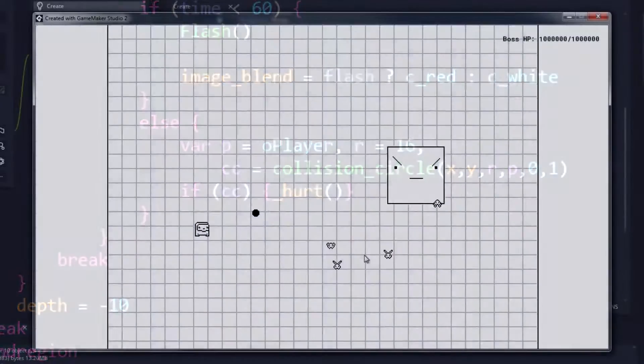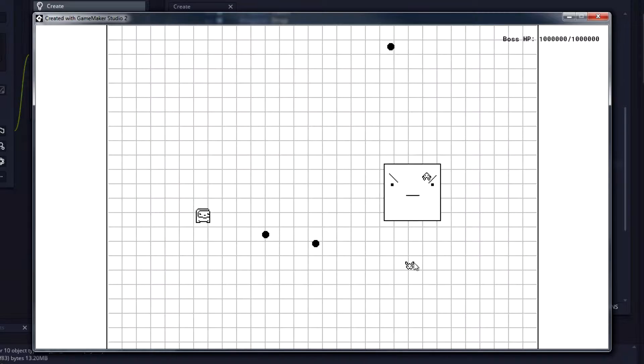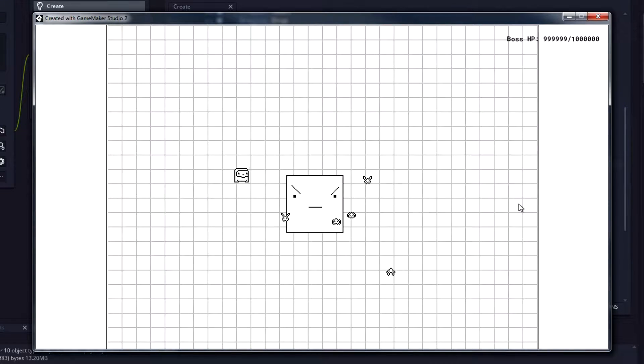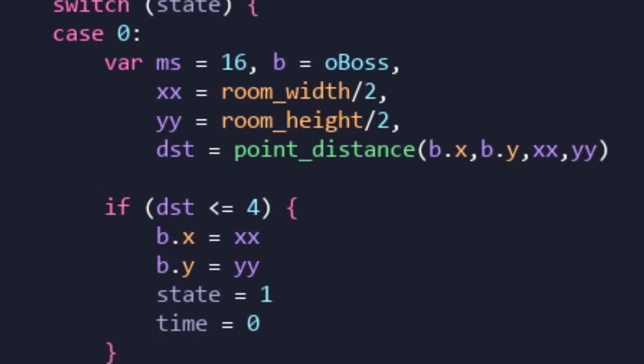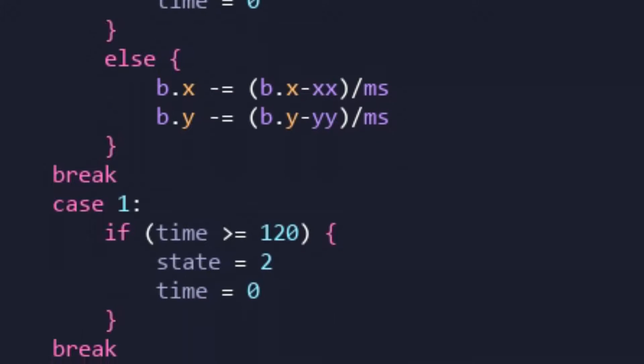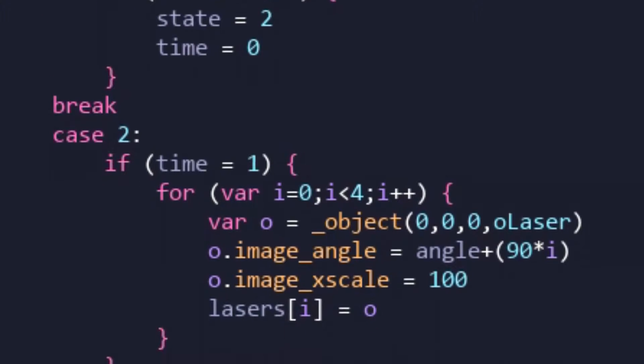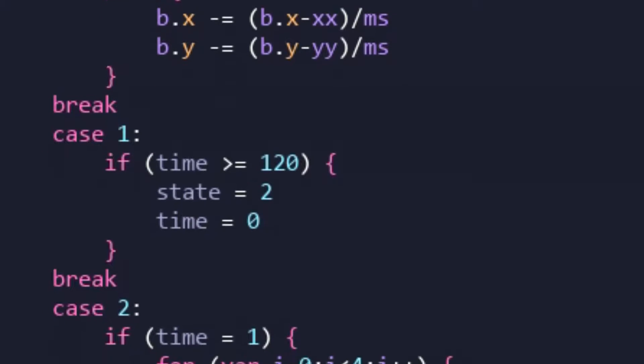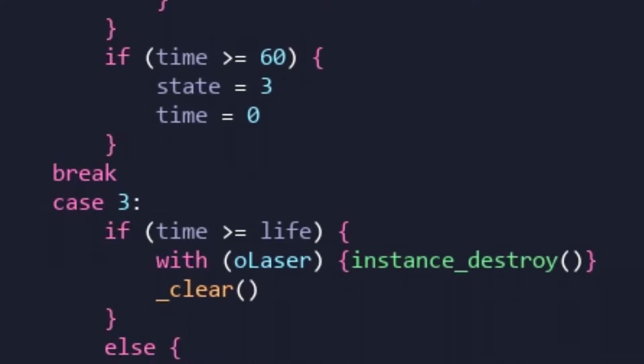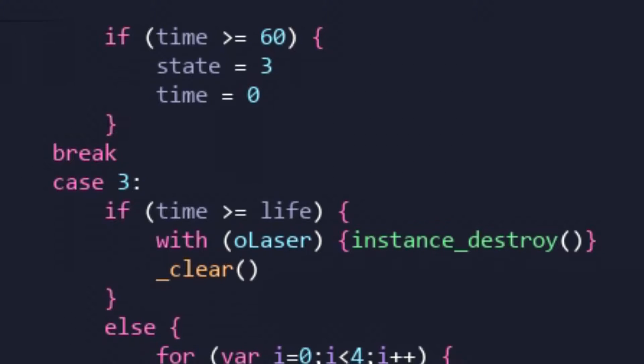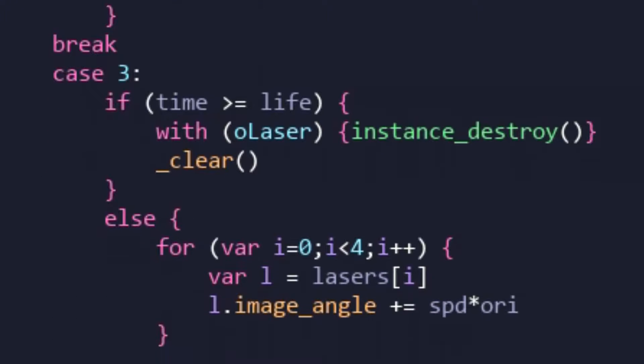For now, these flies simply follow the player and after a determined amount of time, explode, causing potential AoE damage via collision circle. The next attack is a variation of the laser attack added in a previous episode. Only this time, four lasers are created in a cross pattern. These lasers then begin to rotate in a random direction, essentially forcing the player to rotate with it to avoid taking damage.